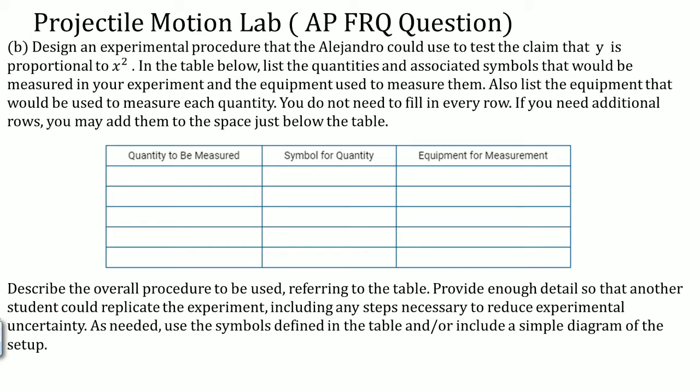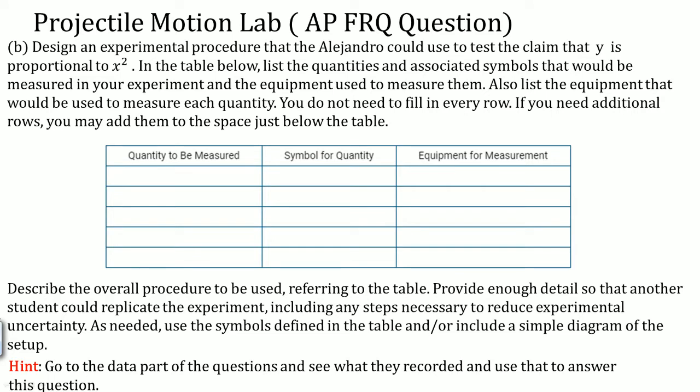Part b asks to design an experiment procedure that Alejandro can use to test the claim that y is proportional to x squared. In this table, list the quality and associate symbols that would be measured. The hint here is to go to the data part of the question and see what they recorded and use that to answer this question.